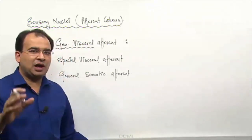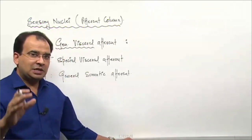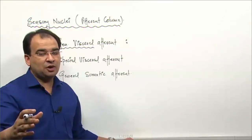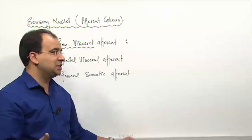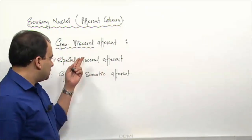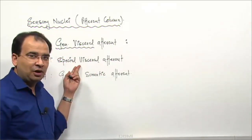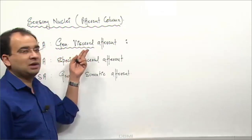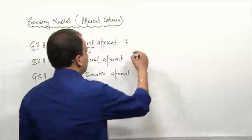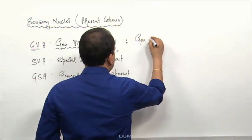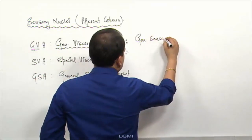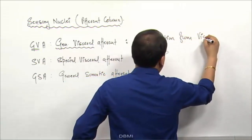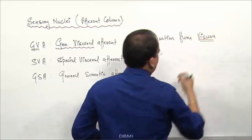For example, if you are having a cup of coffee, the temperature of that coffee is a general sensation, but the taste of the coffee is obviously a special sensation. So that taste will go into the special visceral afferent column, whereas the temperature of that coffee will go into the general visceral afferent column - it is carrying the general sensation from the viscera.